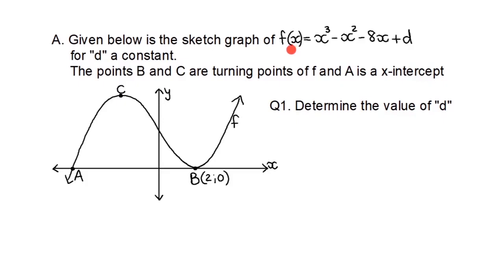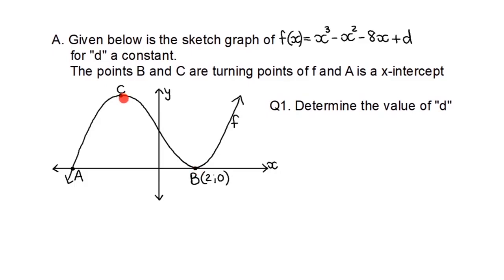Let's look at the first example. Given a sketch, f(x) equals x³ minus x² minus 8x plus D, where D is a constant. The question is to determine the value of D. Points B and C are the turning points on the sketch, and point A is an x-intercept. B is also a special x-intercept — the graph touches the x-axis there and it's also a turning point.